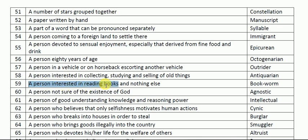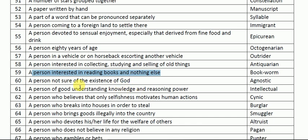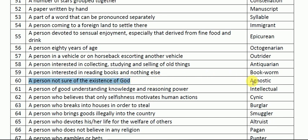A person interested in reading books and nothing else is called a bookworm — 'kitabi keeda' in Hindi — someone who only and always wants to read books day and night. Next: a person not sure of the existence of God is called agnostic. An agnostic is not quite the same as a theist or atheist — a theist believes in God, an atheist does not, but an agnostic is doubtful about the existence of God.